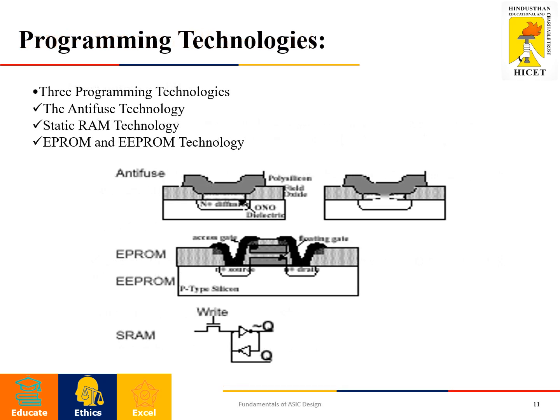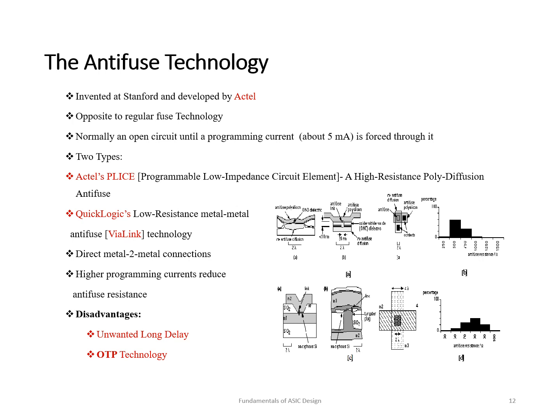Three programming technologies are used: antifuse, SRAM, and EEPROM/EPROM. Antifuse technology was developed by Actel (ACT) company. It is opposite to a regular fuse — it is normally open and closes when a programming current of about 5 mA is applied. It is classified into two types: Actel's high-resistance oxide-nitride-oxide antifuse, and QuickLogic's low-resistance metal-to-metal antifuse. Higher programming currents reduce antifuse resistance. Drawbacks include unwanted propagation delay and it is a one-time programmable (OTP) technology.